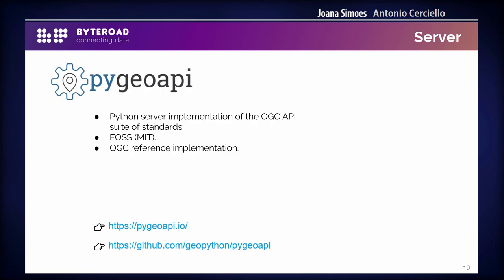A few words about PyGeoAPI. PyGeoAPI is a Python implementation of the OGC API suite of standards. It's now an OGC project, it's free open-source software, and it's an OGC reference implementation for OGC API Features — one of the approved standards. The others are still a work in progress, but PyGeoAPI is already supporting them while also collaborating in their definition.